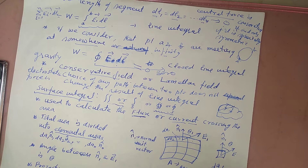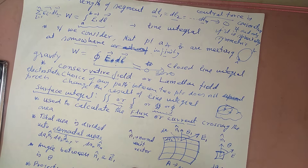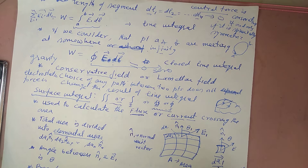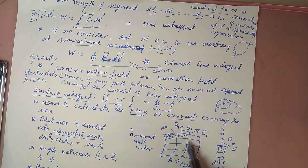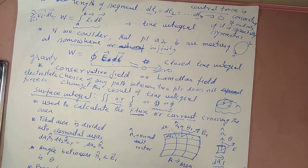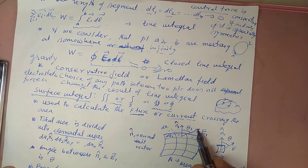Each area element dA is considered very small in magnitude and is treated as a vector having a direction normal to the surface. The direction of each area element is denoted by a unit normal vector — n1 hat for dA1, n2 hat for dA2, n3 hat for dA3, and so on.